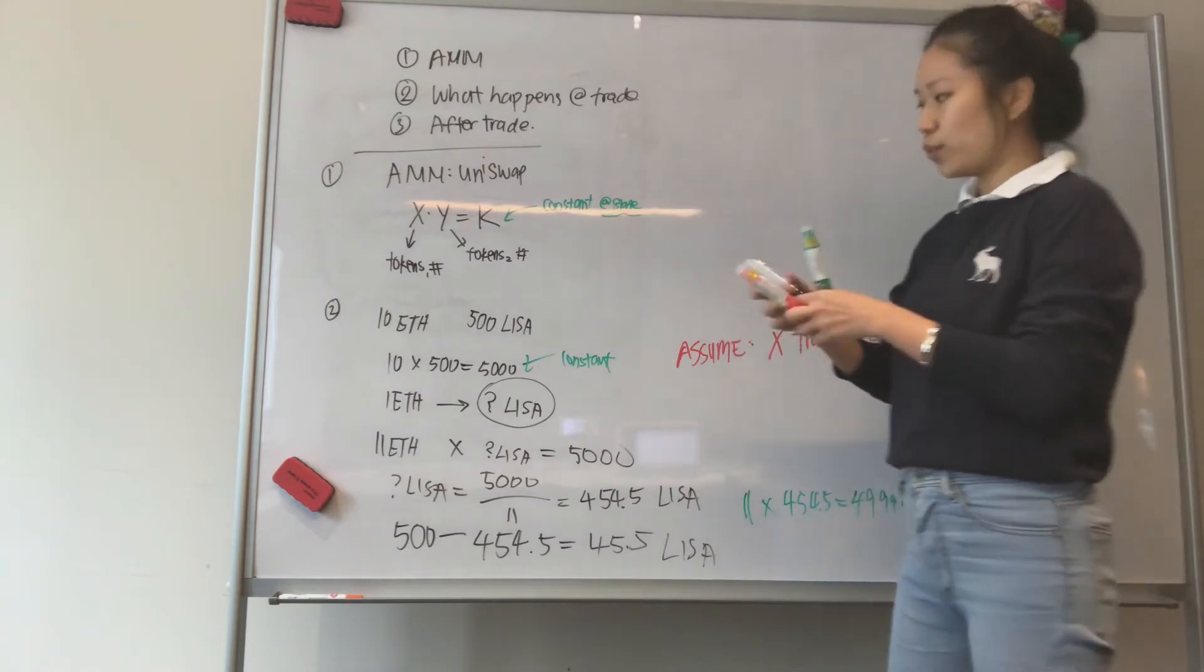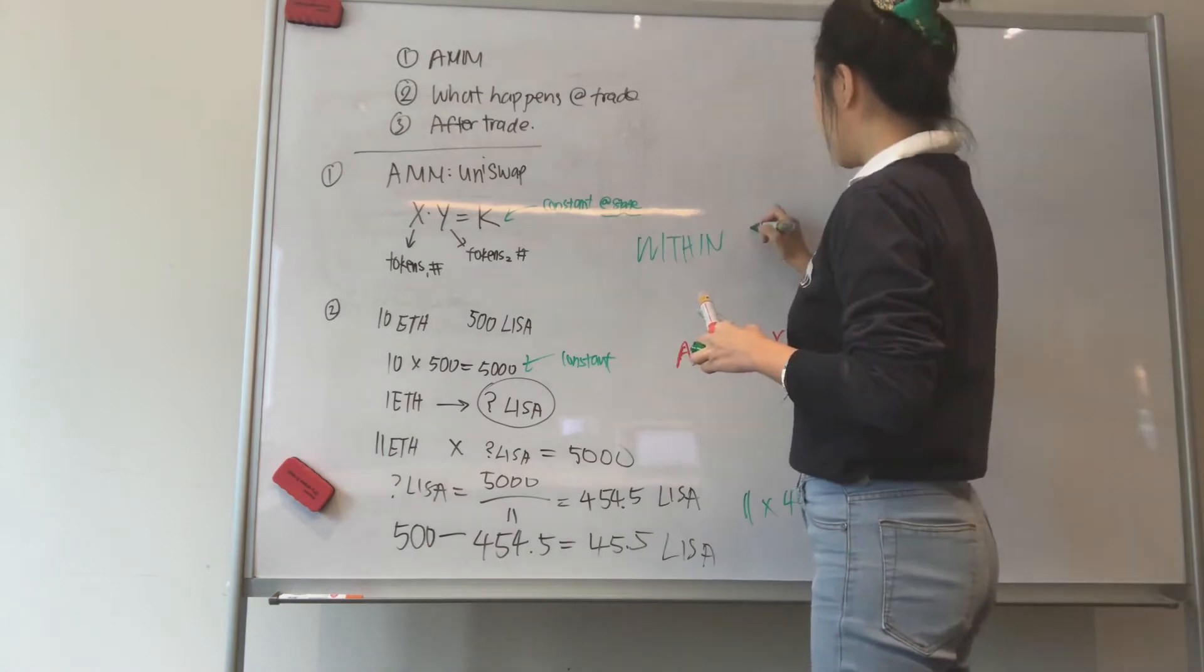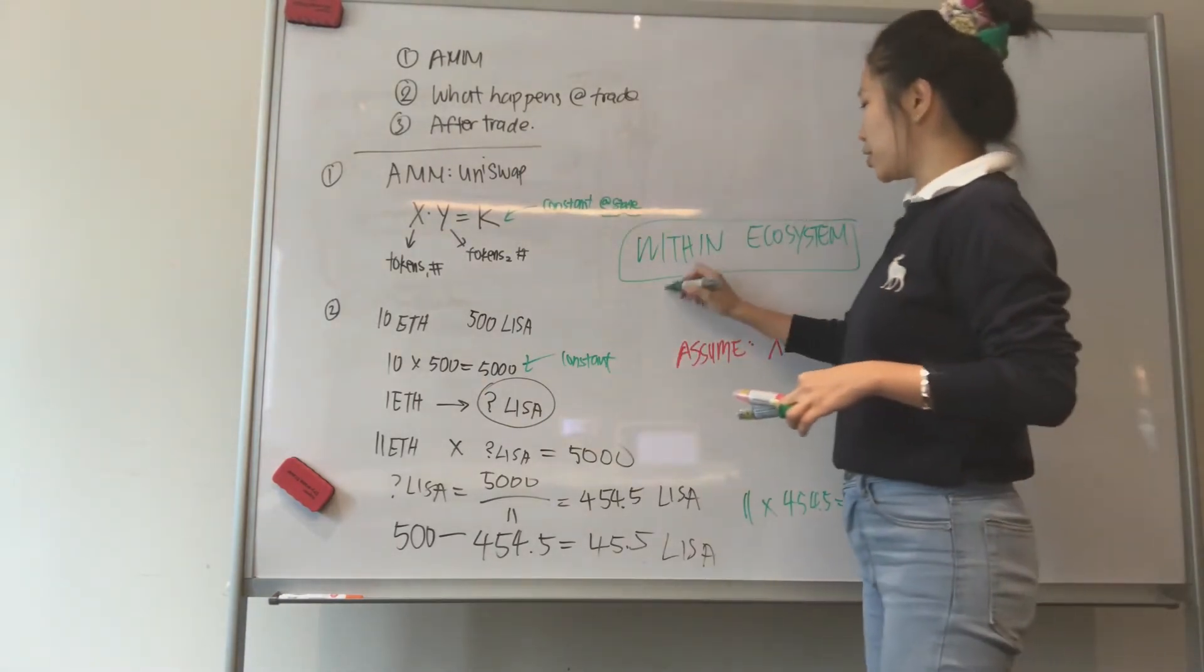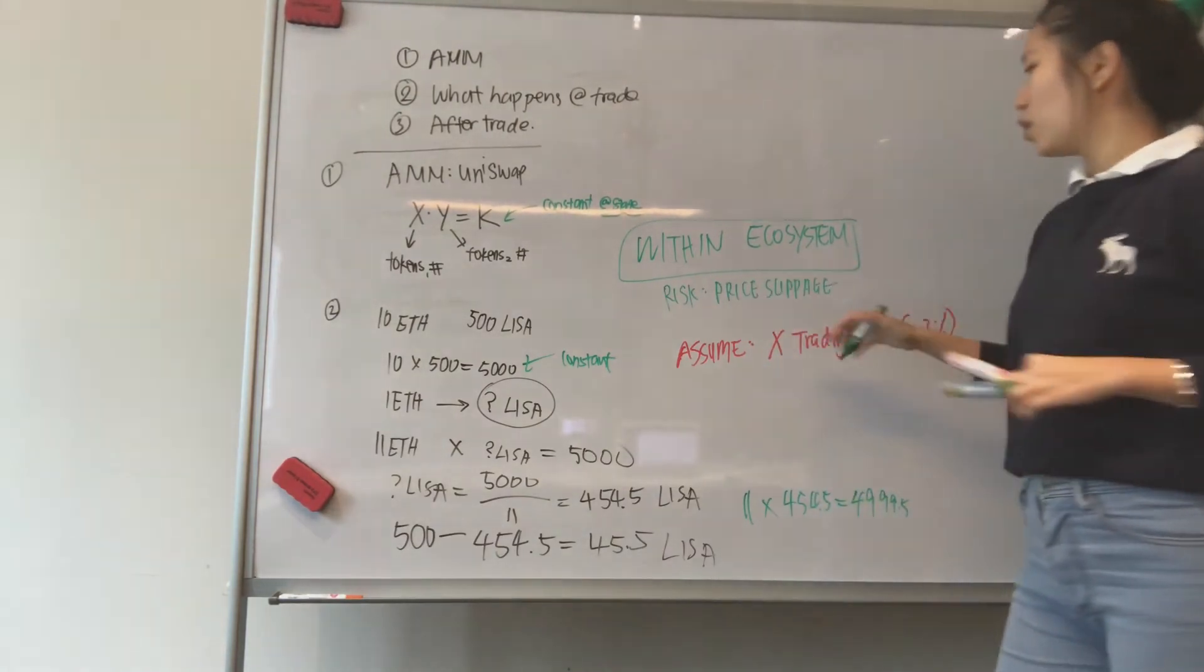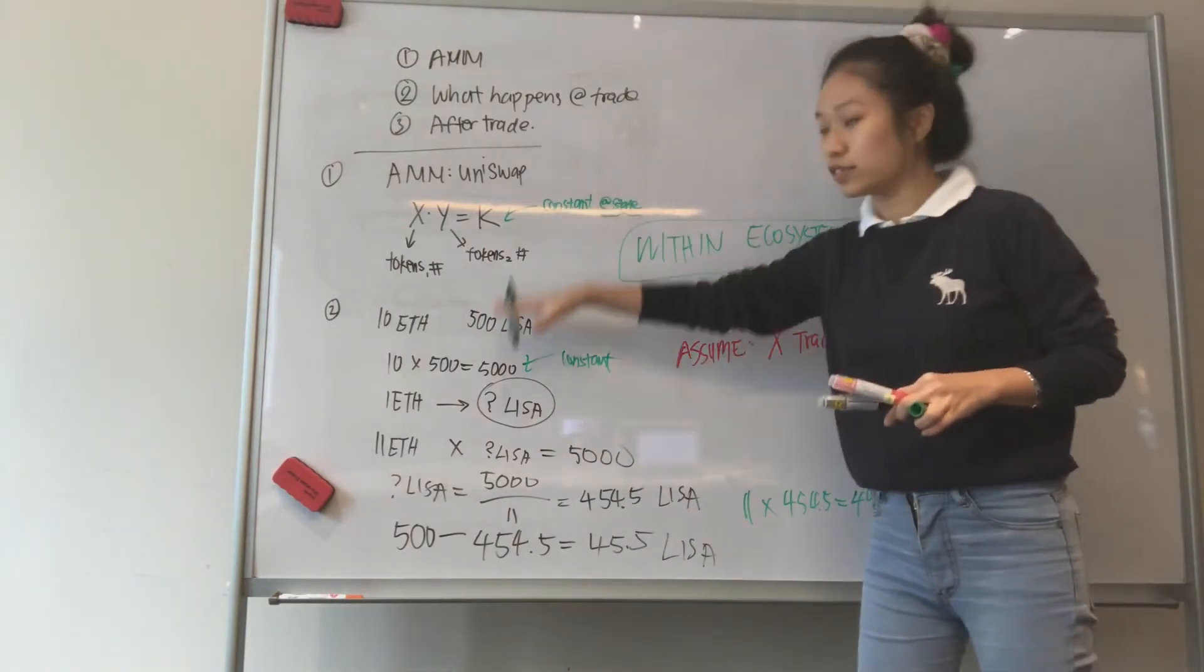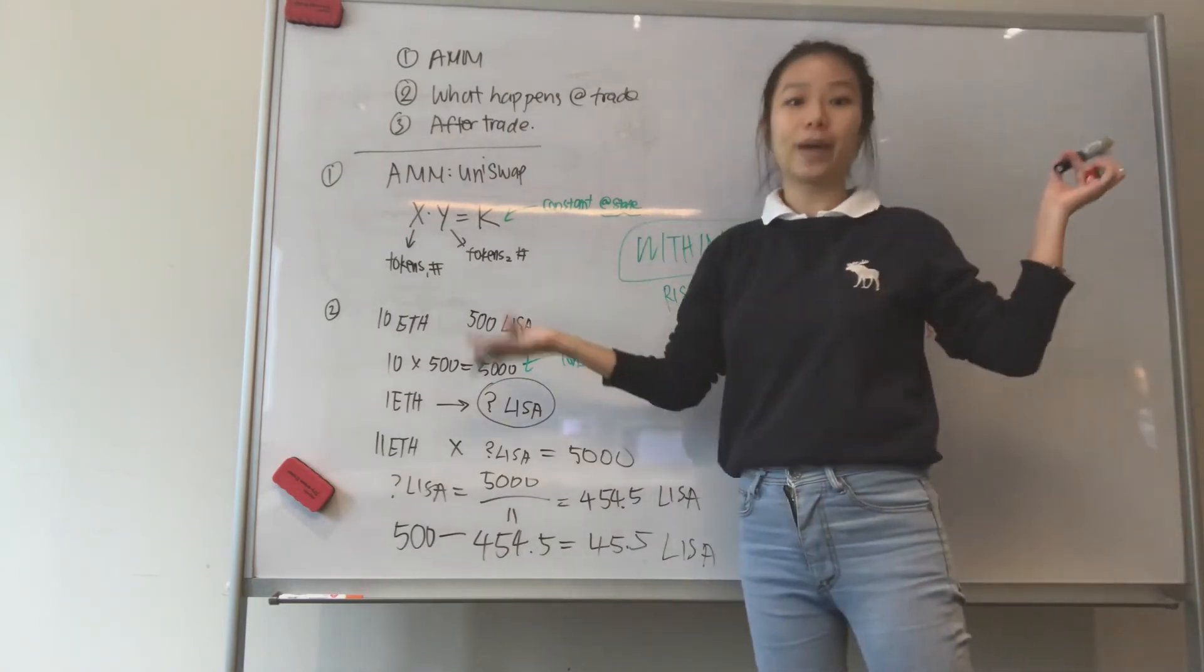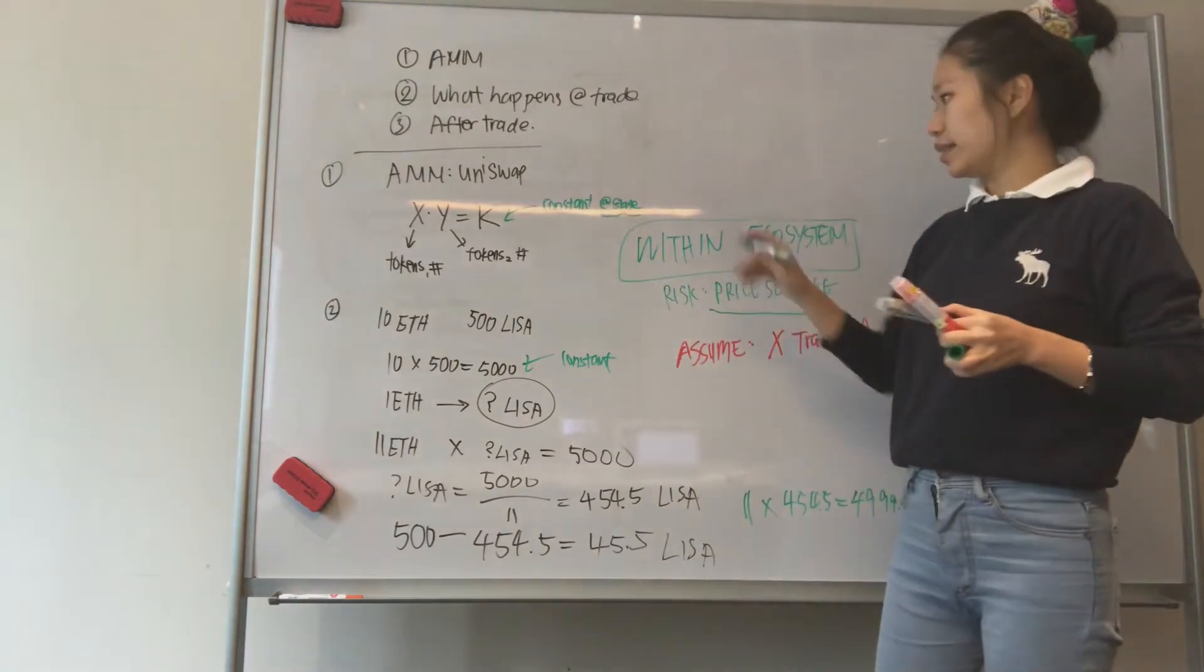Risk, what is this? What we have, this situation that we have, is within the ecosystem, right? So everything here is done within the ecosystem. And what risk are we talking about here? We're talking about price slippage. So everything that's done here, it's all the things that's moving around. It's all within the ecosystem. You don't really care about what's happening of LISA token that's listed on Binance or CoinMarketCap or whatever. Everything is down here. But you still have a risk because you have price slippage. So for example, someone gets to purchase it before you. So let's take a look.